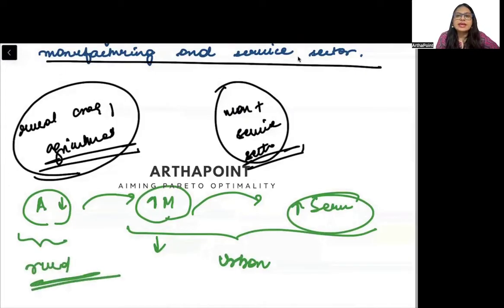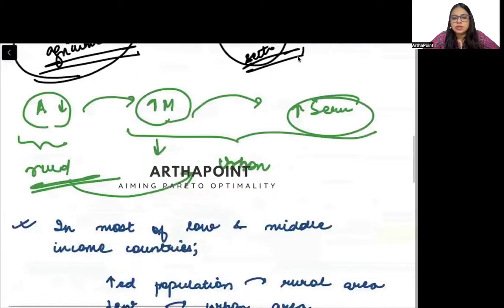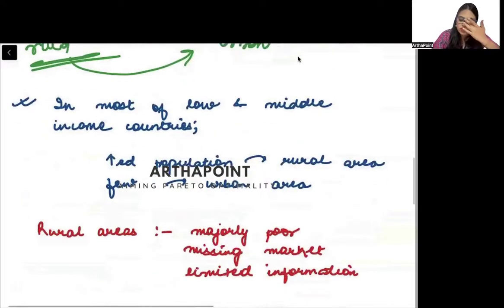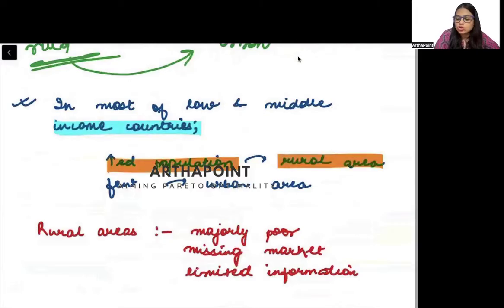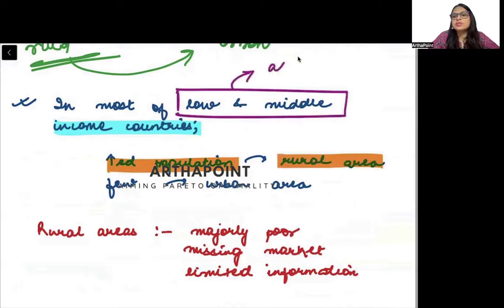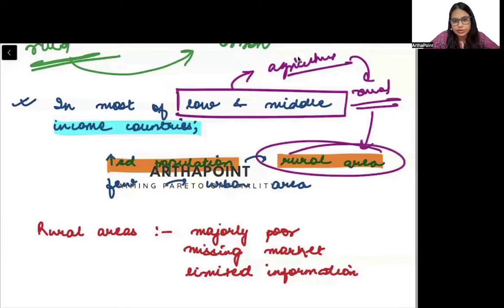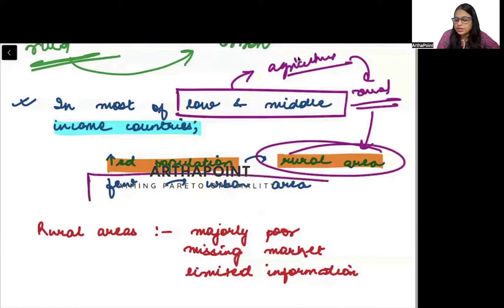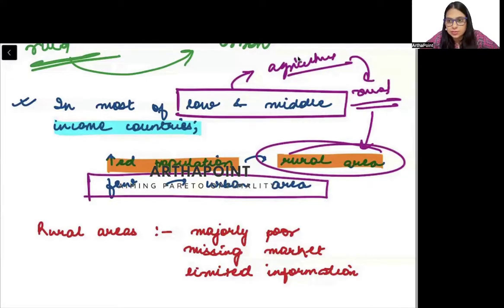We see that there is a transfer of people from rural to the urban area. In most low- and middle-income countries, there is more population in the rural area because the majority of income is still earned through agriculture, and agriculture is in the rural area. But only very few people live in the rural area in high-income countries.